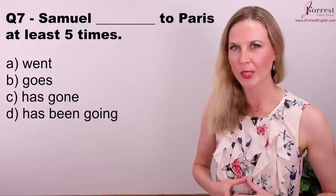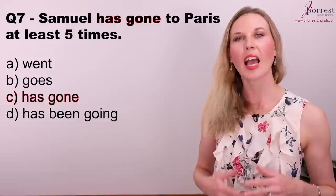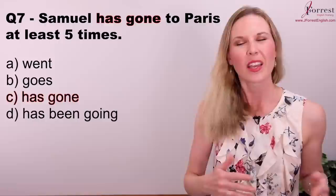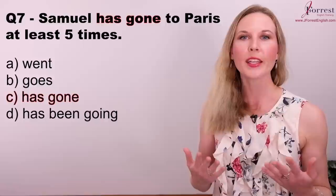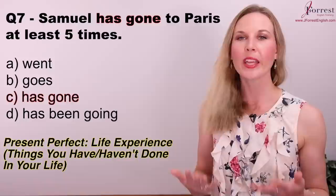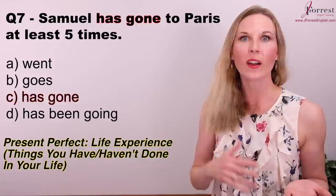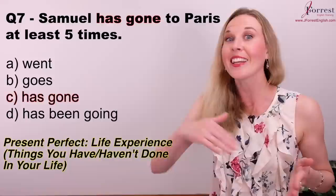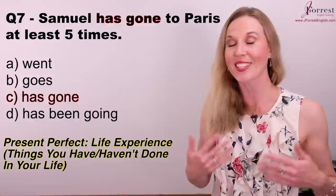Question seven: Samuel has gone to Paris at least five times. There's no indication of time — no past or future reference — so we're talking about general life experience. We use the present perfect 'has gone' to talk about life experience because our life is unfinished, it started in the past and continues until now. While we're alive, we use the present perfect for life experience.